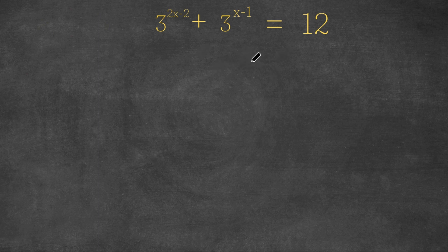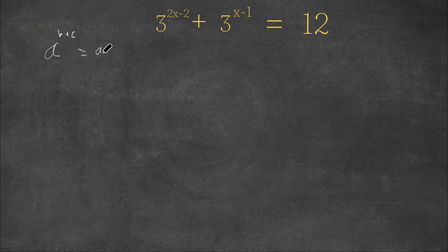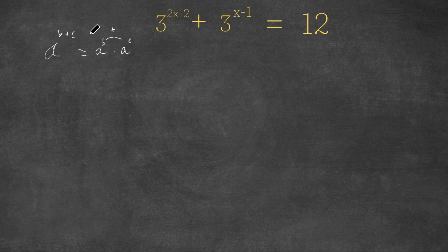What we're first going to do is simplify the left-hand side. Recall that if we have a to the power of b plus c, this is equal to a to the power of b times a to the power of c. Because when we multiply exponents, we add the exponents — we're simply reversing that and changing it back to its original form.